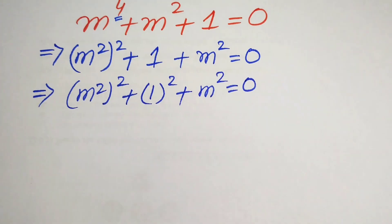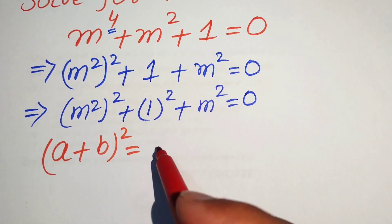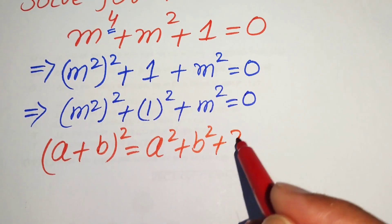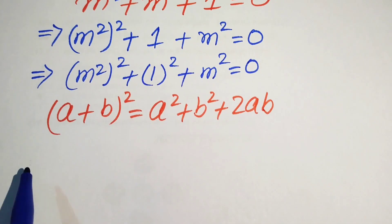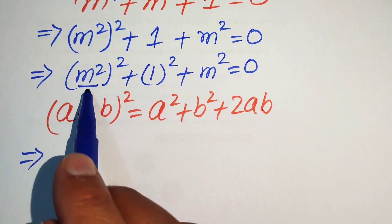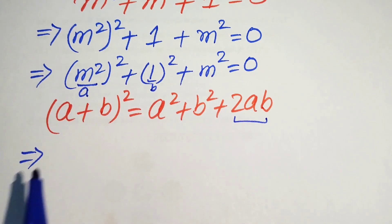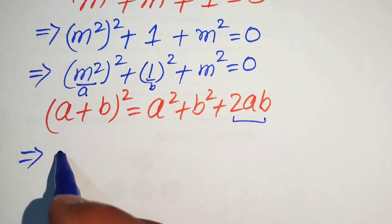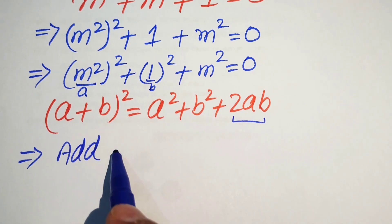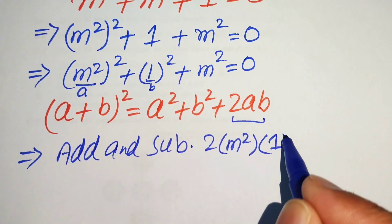We need the square identity: if we have a plus b whole square, it equals a squared plus b squared plus 2 times a times b. To complete the square, we identify a as m squared and b as 1, so 2ab becomes 2 times m squared times 1. We then add and subtract 2 times m squared times 1 in the above equation.